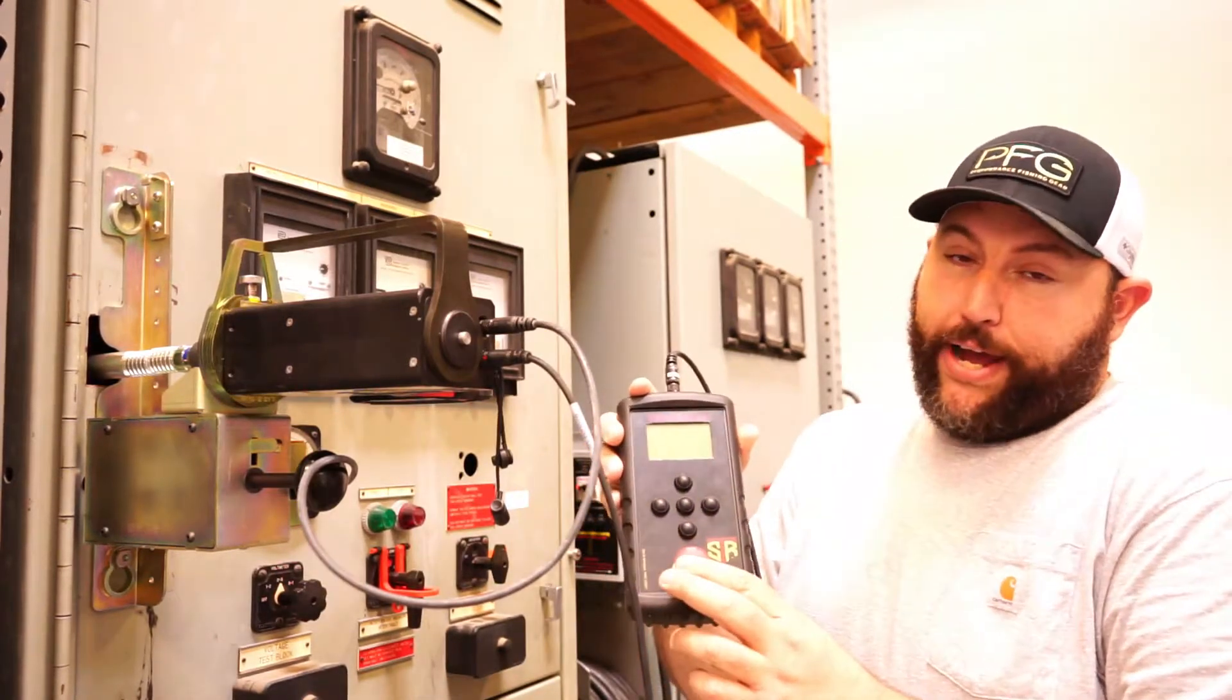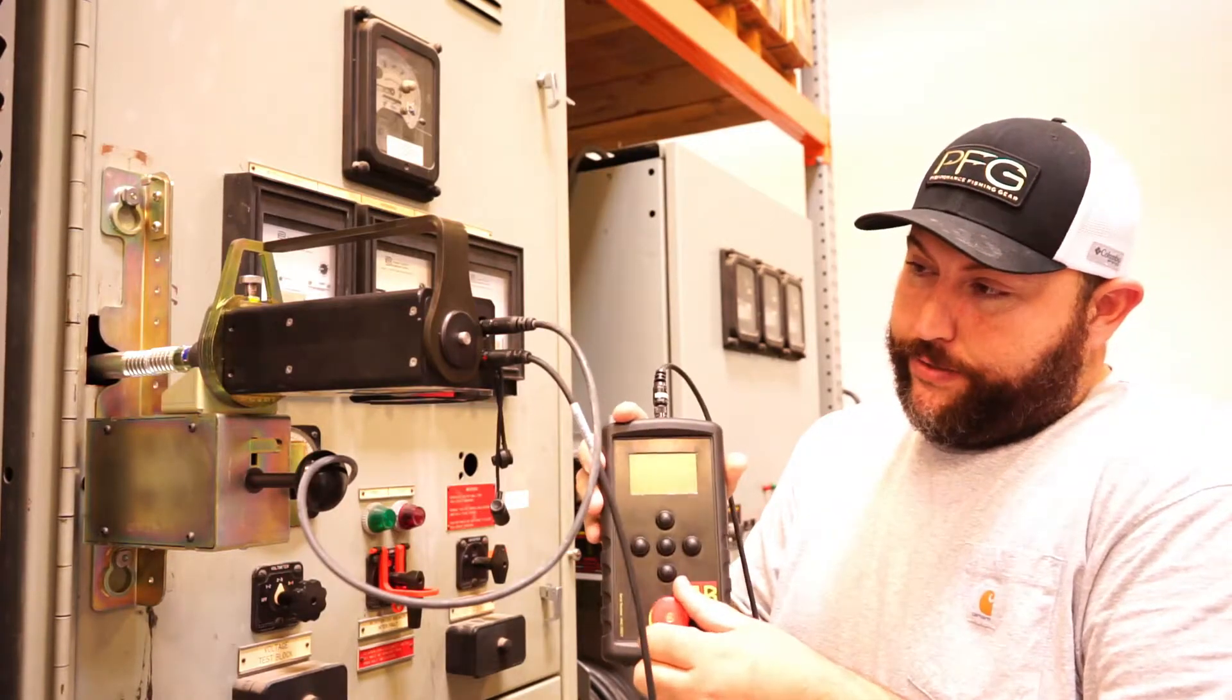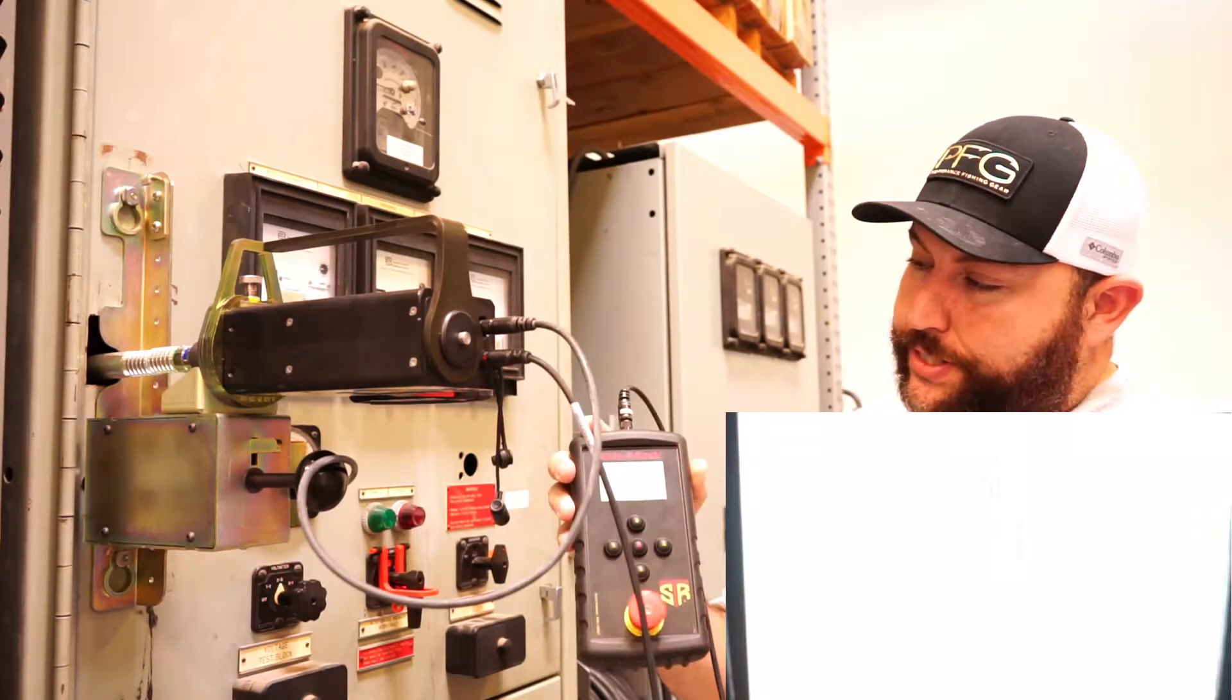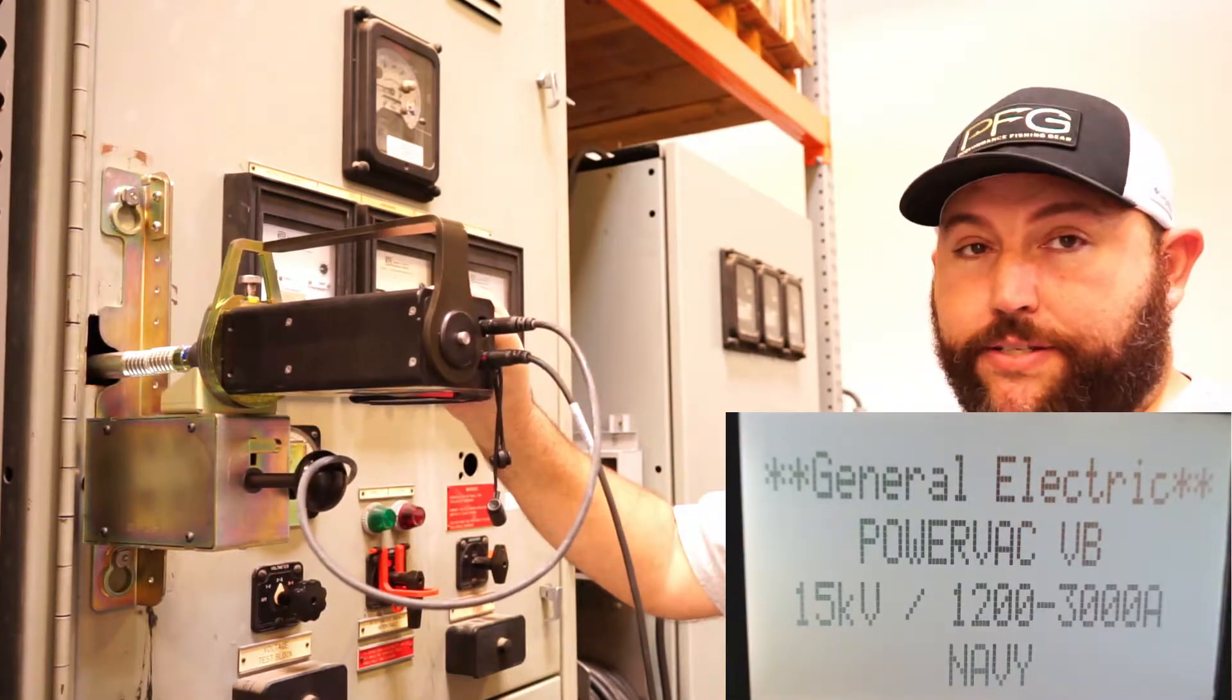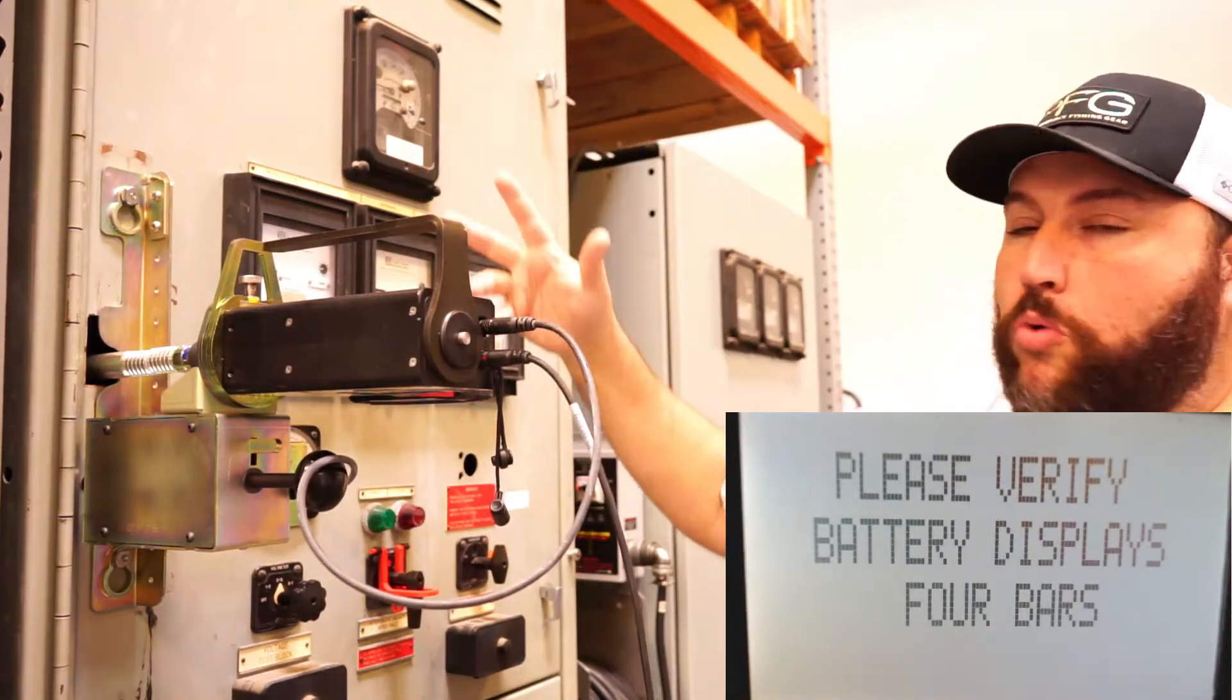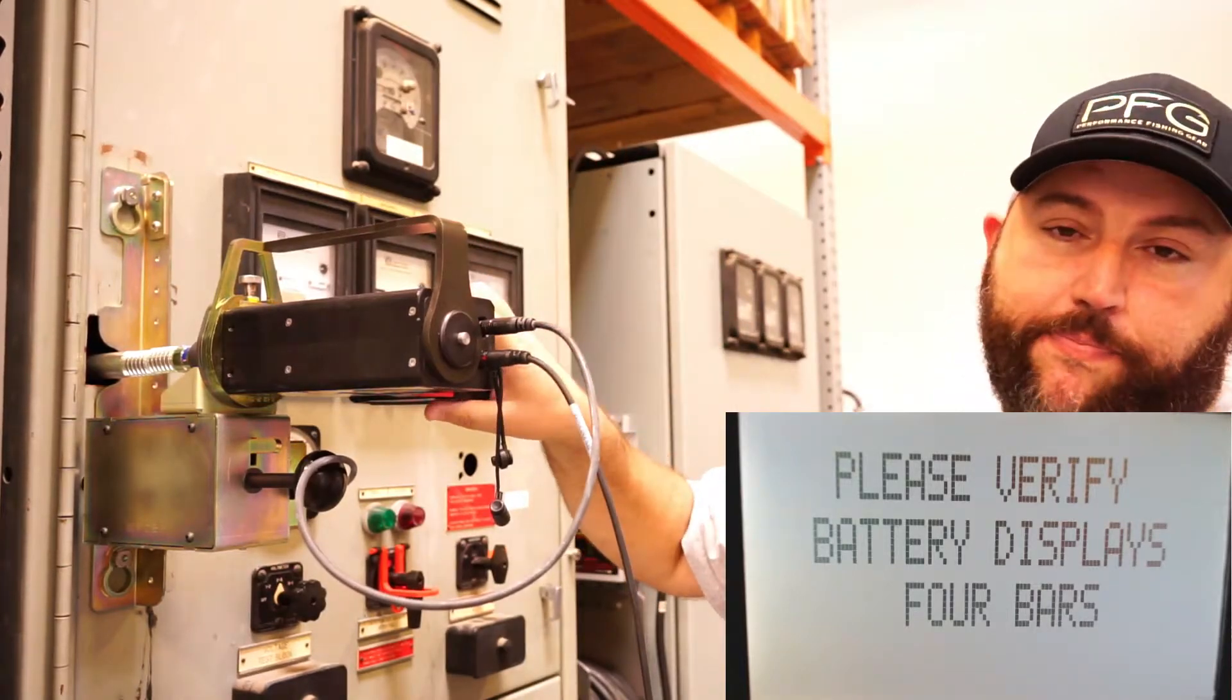The way this works, your e-stop button is also your power button, so if we turn this, the system powers up. And again, everything powers up off of this battery. There's no hard wiring, nothing has to be wired in place, everything's powered off the battery.